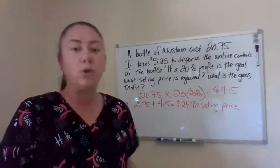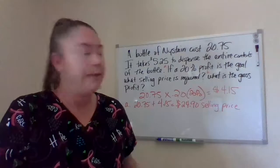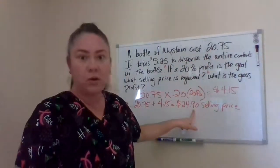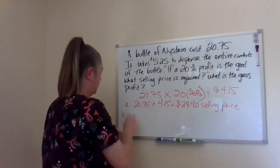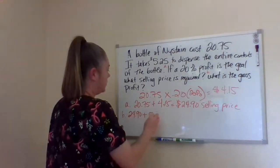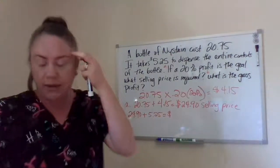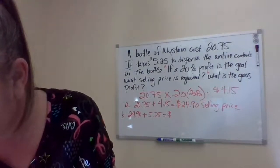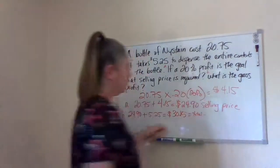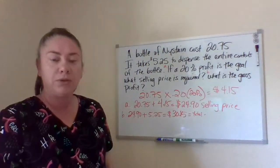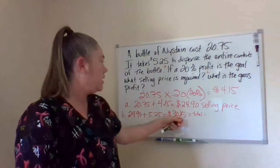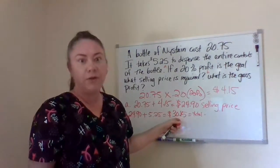Now the problem asks what is the gross profit — what is the gross amount that we make? We have to add our dispensing fee to the selling price. So $24.90 plus the $5.25 dispensing fee gives us $30.15. This is the total amount we're selling it for, including the percentage profit we want to make. When a patient comes in and purchases this, they're going to be paying $30.15.